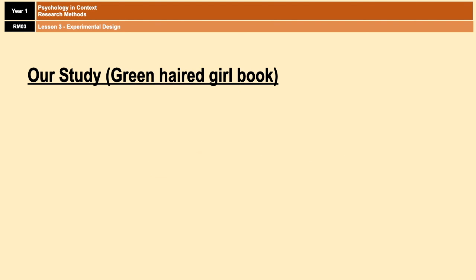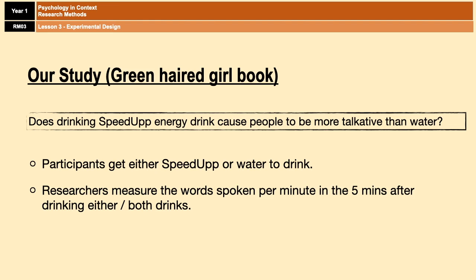It works very simply. Participants are given either some Speed Up to drink, which is an energy drink, or some water. Then the researchers observe the participants and count the mean number of words spoken in the following five minutes, which is then compared between the water and the Speed Up conditions.